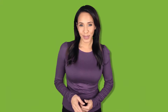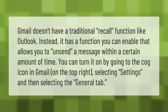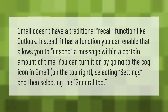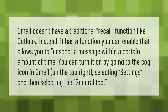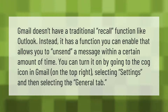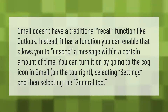Gmail doesn't have a traditional recall function like Outlook. Instead, it has a function you can enable that allows you to unsend a message within a certain amount of time. You can turn it on by going to the cog icon in Gmail on the top right, selecting Settings, and then selecting the General tab.